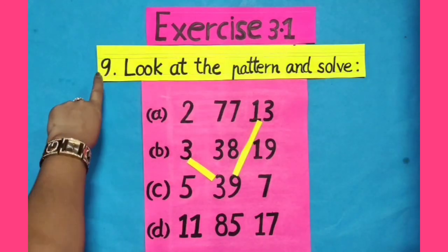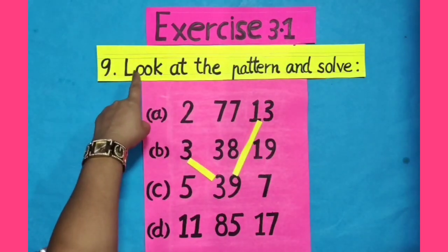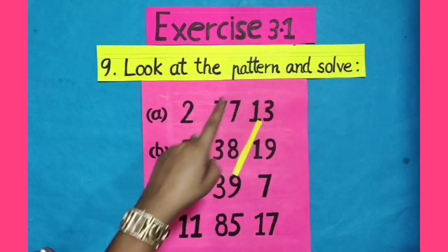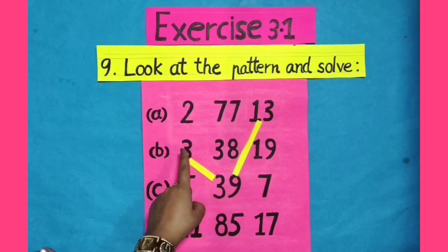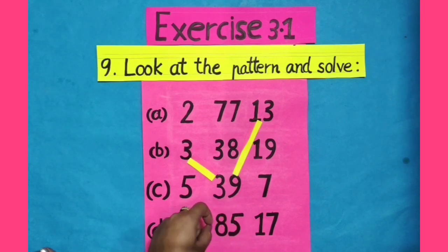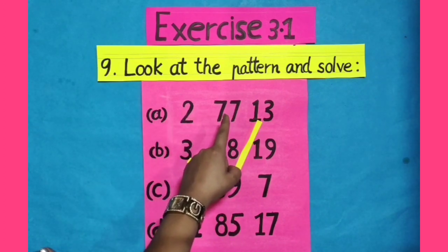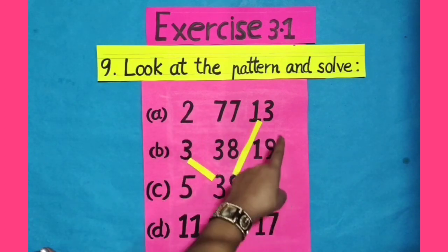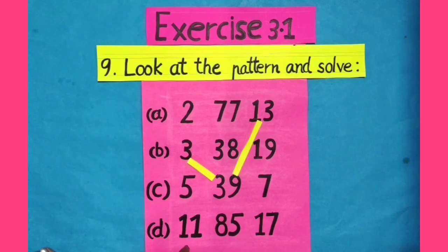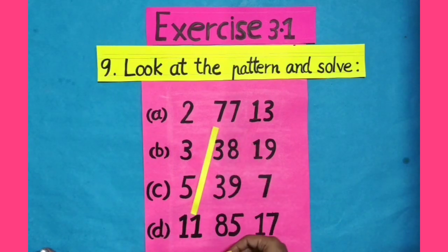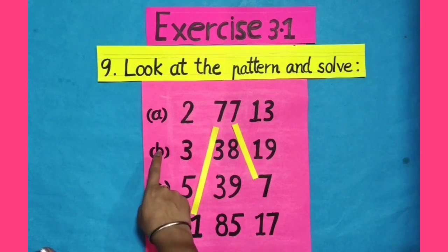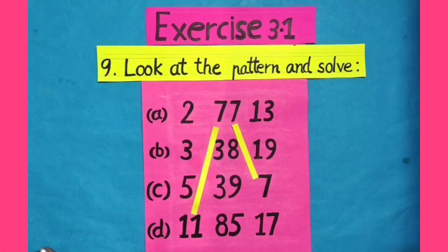Dear students, let's solve question number 9 of exercise 3.1. The question is: look at the pattern and solve. Part C is already solved for us — we can see that 3 and 13 are factors of 39, so 3 and 13 are matched with 39. Let's do part A. Here we can see the number 77, so let's find the factors of 77 in this grid. 11 and 7 are the factors of 77, so let's match 11 with 77 and 7 with 77. Now, solve part B and D yourself at your homes. Thank you so much.